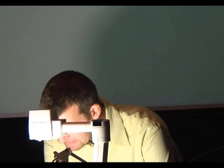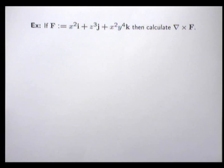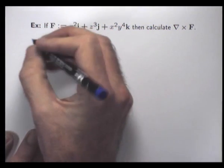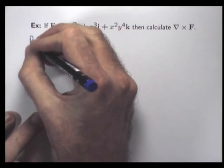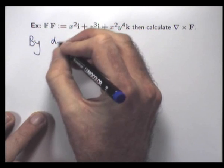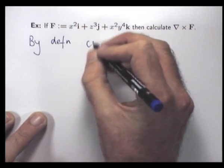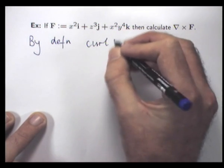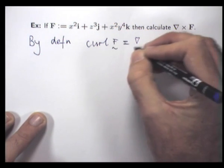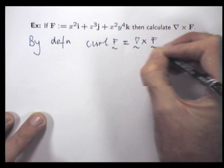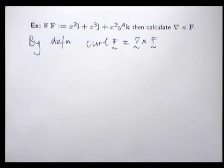Let's do an example first and just calculate the curl of a given vector field. By definition, the curl of a vector field is just the del operator crossed with the given vector field, right?